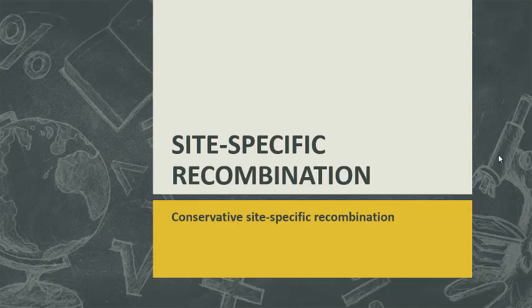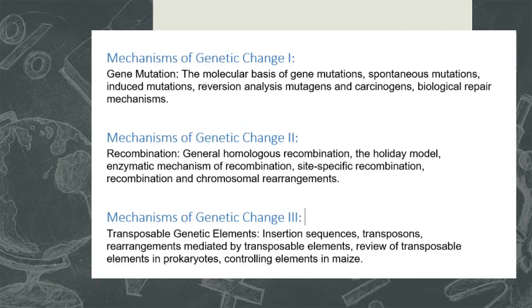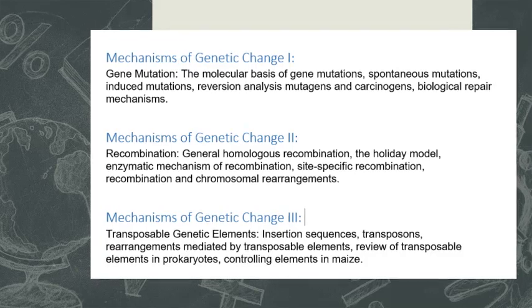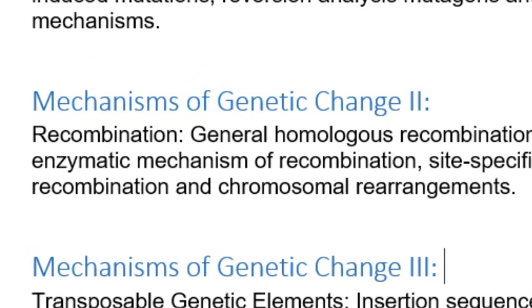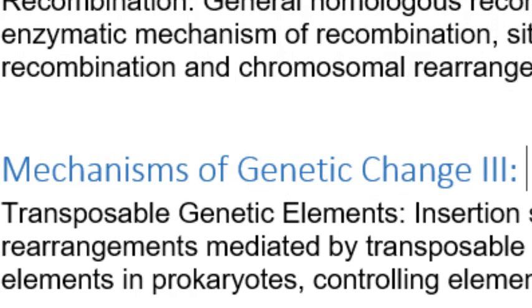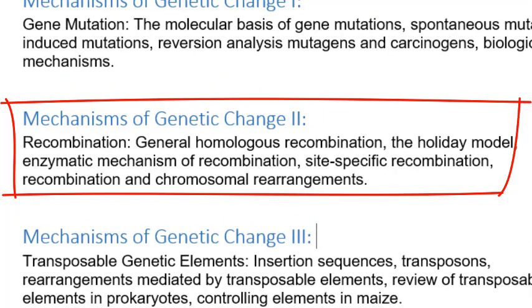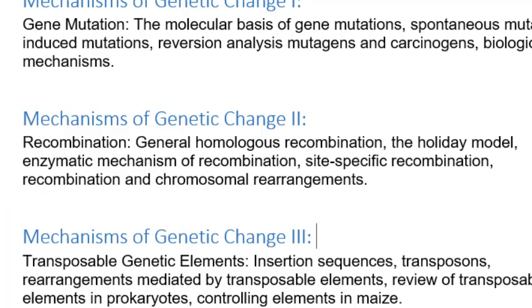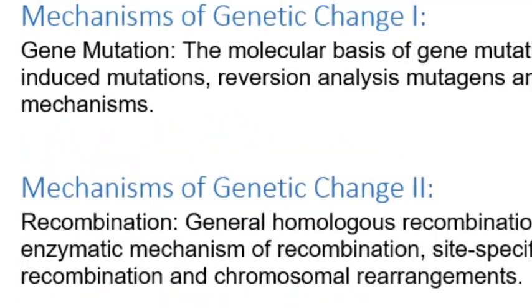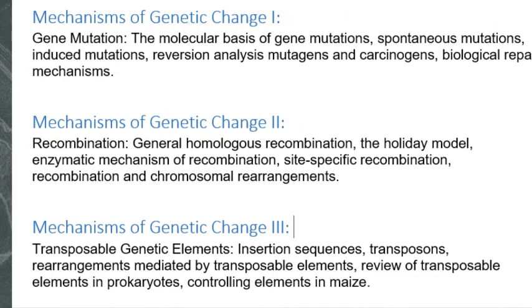In this class, we are going to resume our topic that we were discussing before the lockdown when the colleges were closed. According to our course outline of Genetics II of the 8th semester, we have three topics in a row titled Mechanism of Genetic Change I, II, and III. We are discussing Mechanisms of Genetic Change II, having skipped the first part, Gene Mutation. In this second part, we were discussing recombination — the general homologous recombinations — and we have discussed the Holliday model.